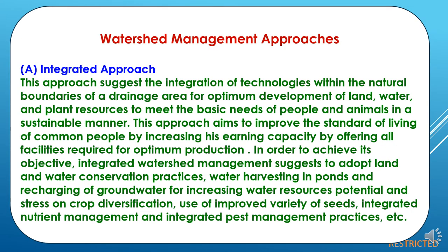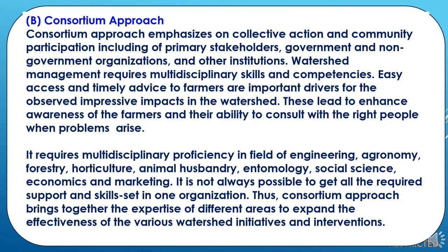Now we will study watershed management approaches. There are two approaches. The first is the integrated approach, which suggests the integration of technologies with the natural boundaries of a drainage area for optimum development of land, water and plant resources to meet the basic needs of people and animals in a sustainable manner. This approach aims to improve standards of living of common people by increasing earning capacity. It involves adopting land and water conservation practices, water harvesting in ponds, recharging of groundwater, crop diversification, use of improved variety seeds, integrated nutrient management and integrated pest management practices.